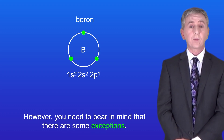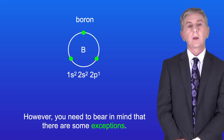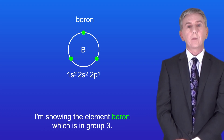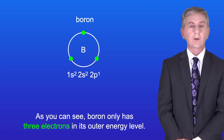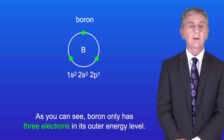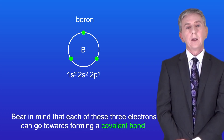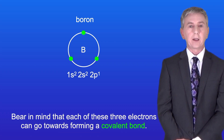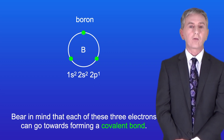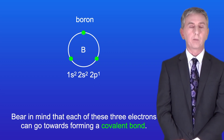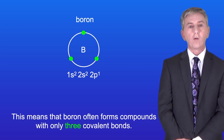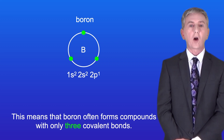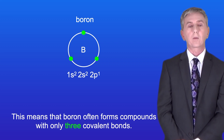However, you need to bear in mind that there are some exceptions. Here is the element boron, which is in group three. As you can see, boron only has three electrons in its outer energy level. Each of these three electrons can go towards forming a covalent bond, so boron often forms compounds with only three covalent bonds.